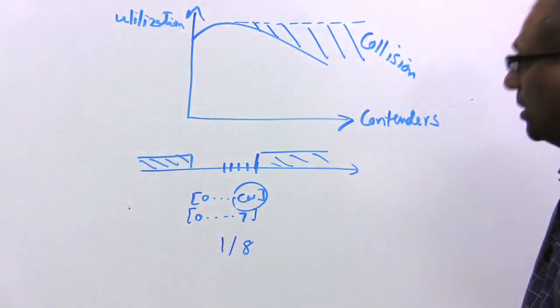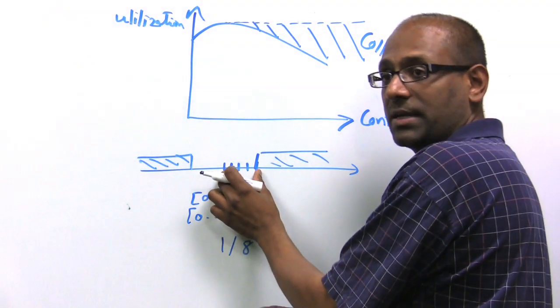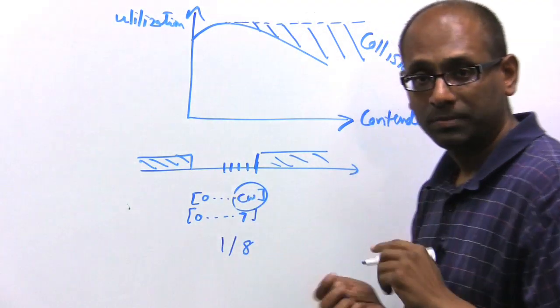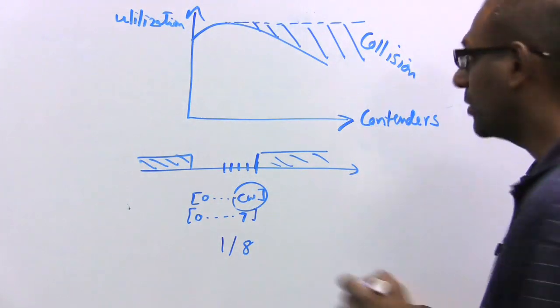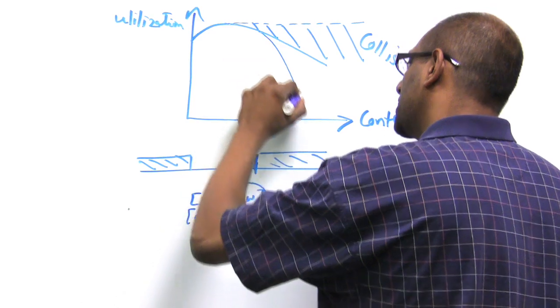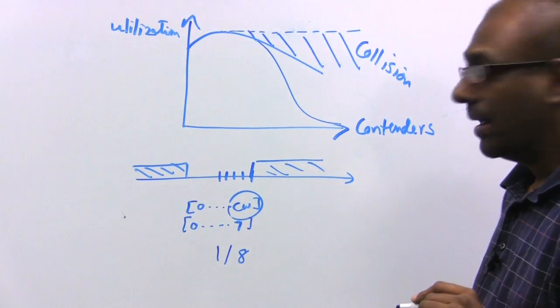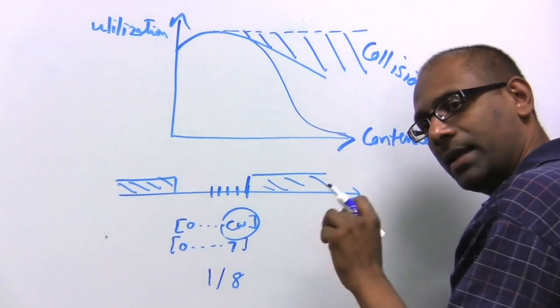What is collision? When there are two devices that happen to pick the same value, that's a collision. Now let's look at 802.11. It turns out the 802.11 graph is actually much steeper. And the reason is, unlike Ethernet, there is no collision detection in 802.11.